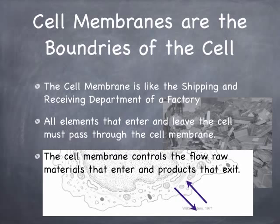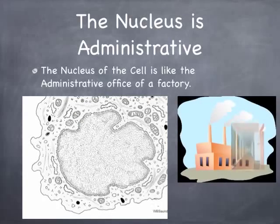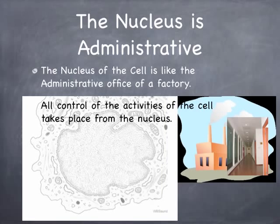The next part is the nucleus, and the nucleus is the administrative part of the cell. If this was our factory, the nucleus would be the administrative office. Any factory is going to have big areas where they're constructing and building various products, but somewhere within that factory there needs to be an administrative office — there's usually somebody in charge, and a number of people doing various tasks that help the factory to run. That's what the nucleus is — all control of activities are there.